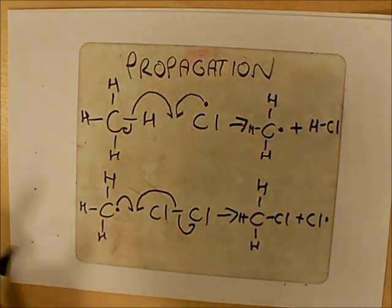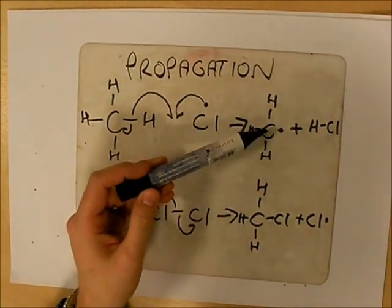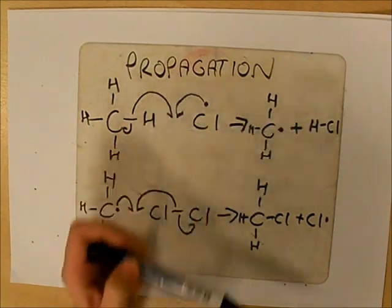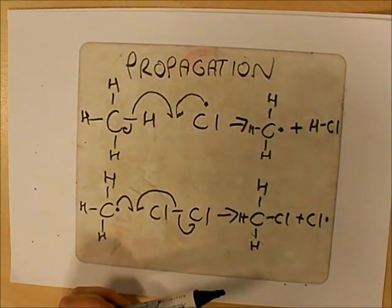This will make our halogenoalkane and a chlorine free radical. So in propagation, each time you will make one free radical and one neutral covalent compound. That's the propagation step.